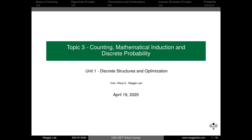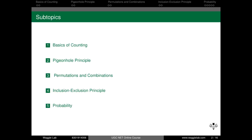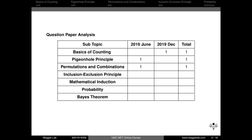Hi all, welcome back to our crash course. In this third chapter, we cover counting, mathematical induction, and discrete probability. The topics covered in this video are basics of counting, pigeonhole principle, permutations and combinations, a short note on inclusion-exclusion principle, and probability. We also do a quick paper analysis focusing on questions from the first three topics from the last two papers.